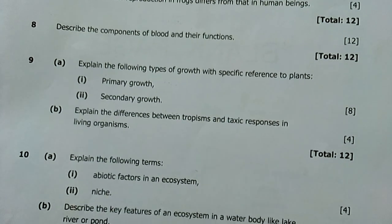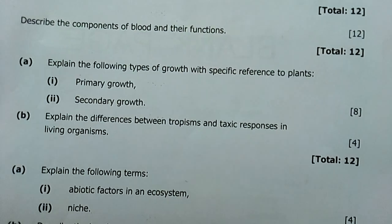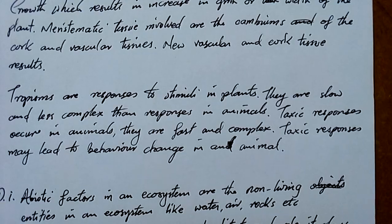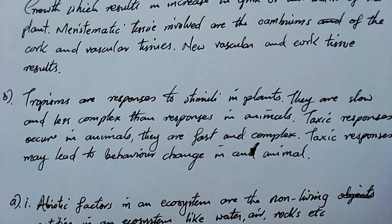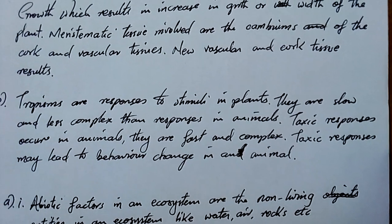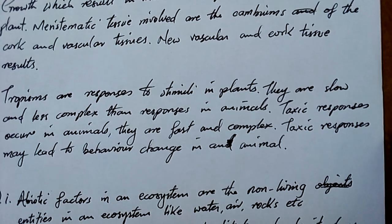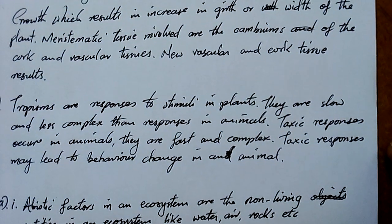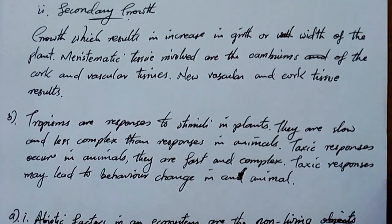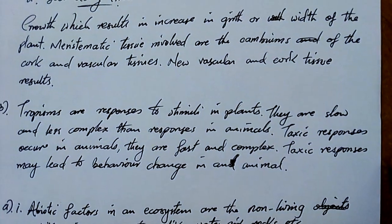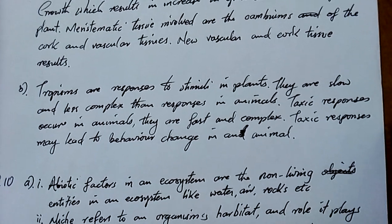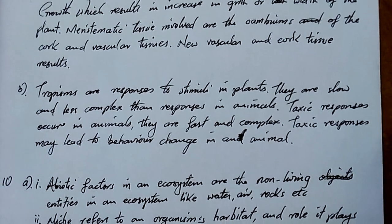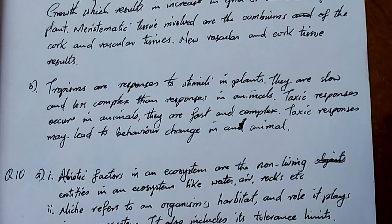Question 9B: explain the difference between tropisms and taxis responses in living organisms. Tropisms are responses to stimuli in plants — they are slow and less complex than responses in animals. Taxis responses occur in animals; they are fast and complex, and may lead to behavior change. Plants don't really have behaviors, but for taxis responses — for example, if you beat a dog once, the next time it sees you it will smell you and run away.